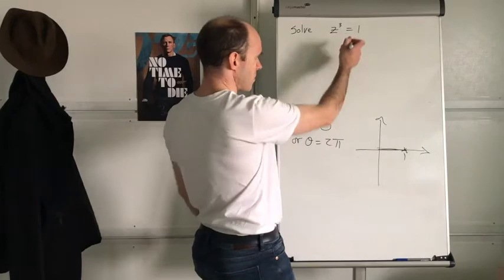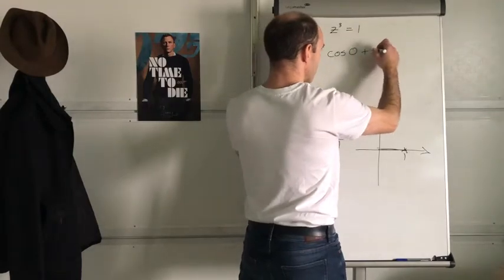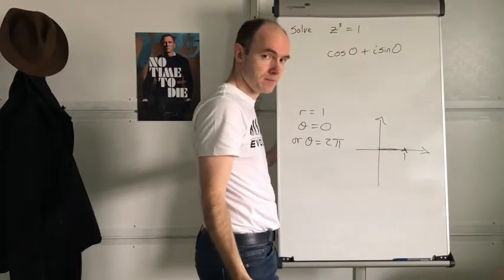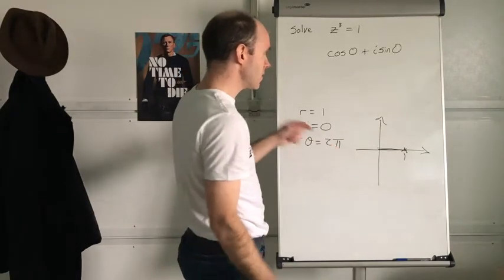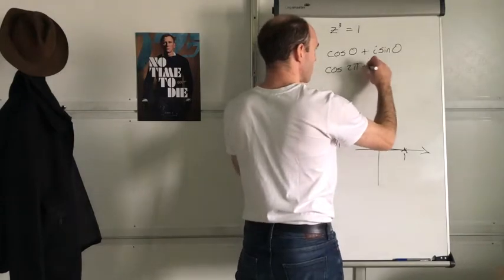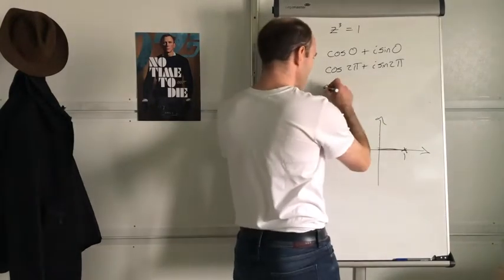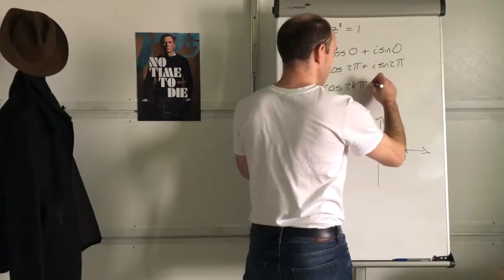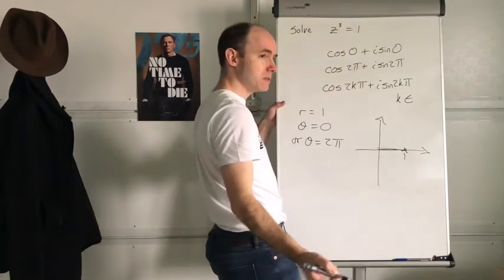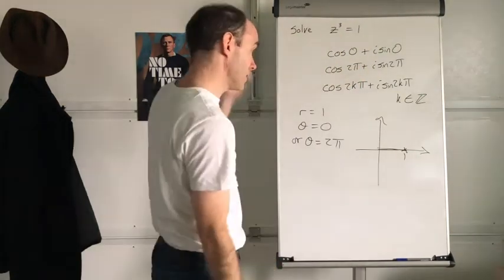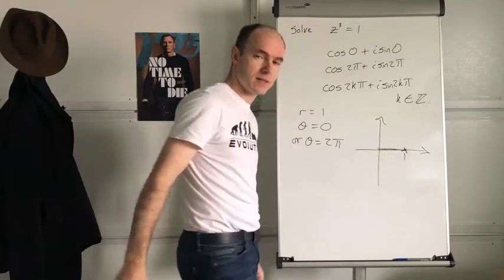So you can actually write this number 1 as 1 times (cos 0 + i·sin 0). So what I'm saying is you can write z³ as that. But there's another possibility — you could also write it as cos 2π + i·sin 2π. Are there other possibilities? Of course there are. In fact, you can write it as cos 2kπ + i·sin 2kπ, where k is an integer — because you just keep going around: 2π, 4π, 6π, 8π, 10π.